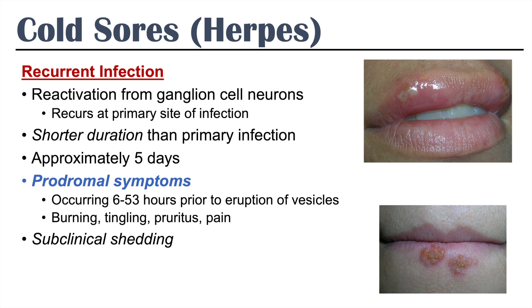Once you have the prodromal symptoms, you're going to have an eruption — that's your recurrent infection. Even if you've resolved the recurrent or primary infection, you can have what is called subclinical shedding of the virus. Even if you don't feel like you have this infection or cold sore, you may be shedding the virus and passing it on to others without even knowing it.